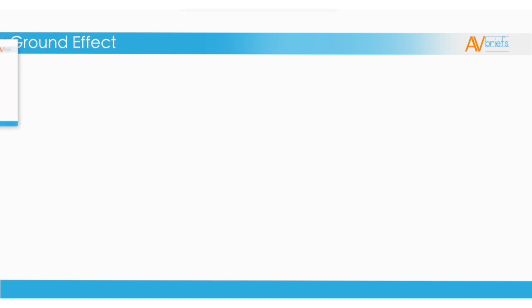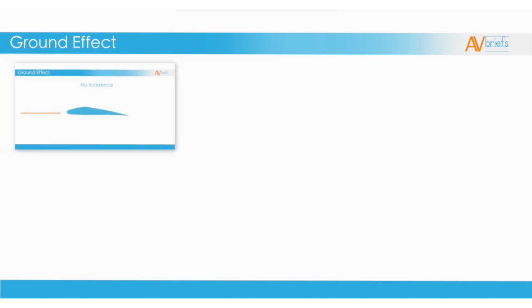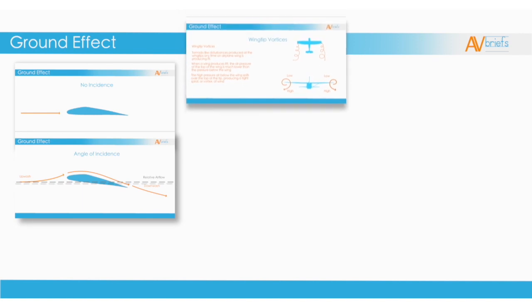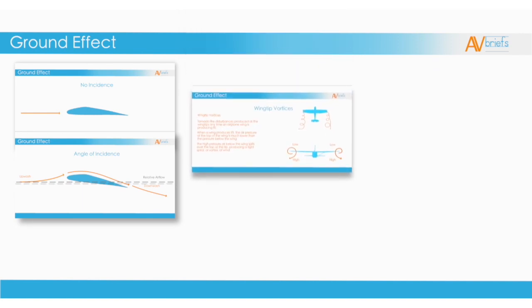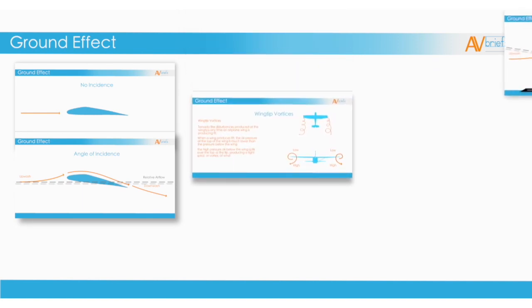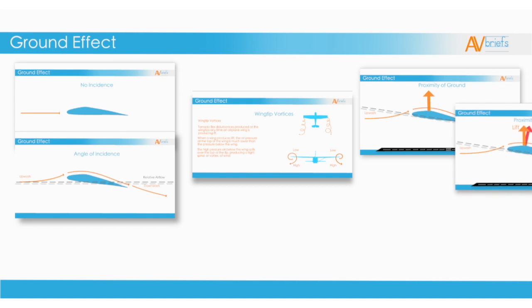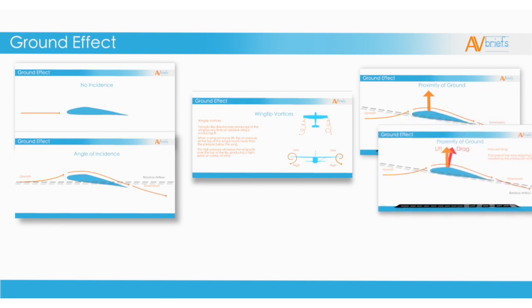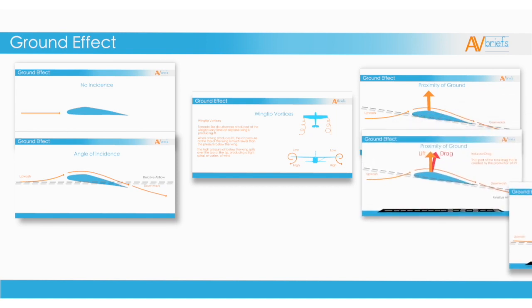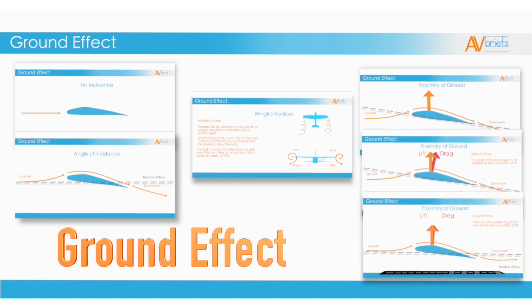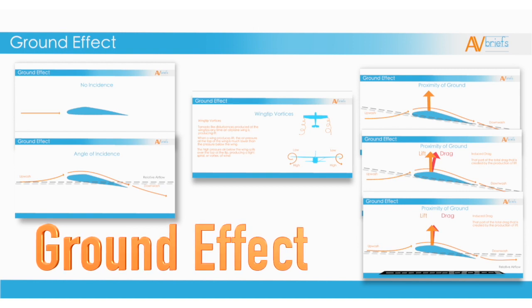So this is how ground effect is created, how it works, and how it affects the aerodynamics of the airplane. It's possible because of incidence and the angle of incidence, proximity of ground, wingtip vortices, and the lift vector changing direction slightly. Thanks for watching, and safe skies from AV Briefs.